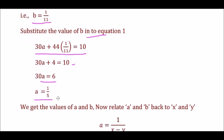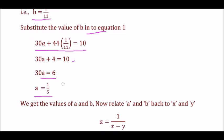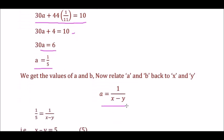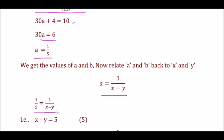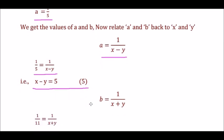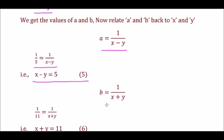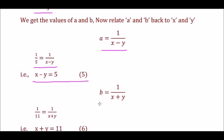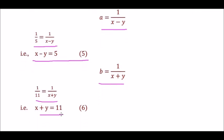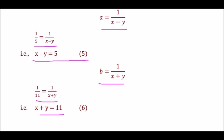Now relate A and B back to X and Y. Since A = 1/(X − Y) = 1/5, we get X − Y = 5, marked as Equation 5. Since B = 1/(X + Y) = 1/11, we get X + Y = 11, marked as Equation 6. We now solve this system of equations to find X and Y.